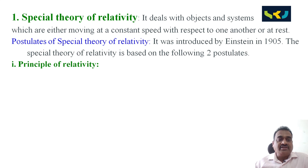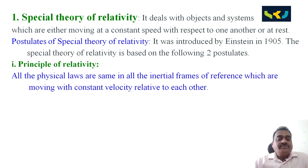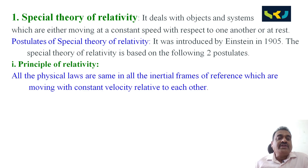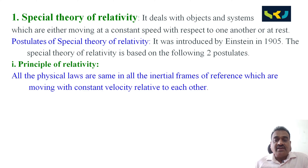First postulate — the principle of relativity: all the physical laws are the same in all inertial frames of reference which are moving with constant velocity relative to each other. This postulate implies that there is no absolute state of rest or absolute motion.